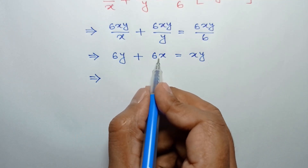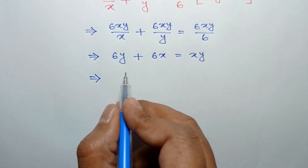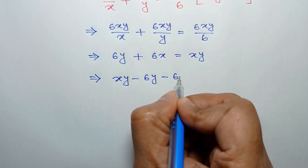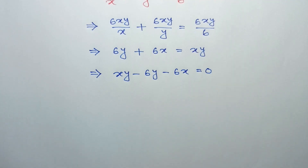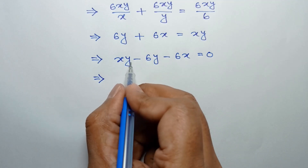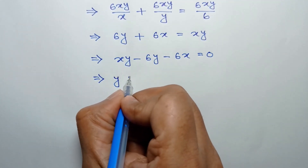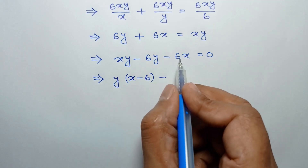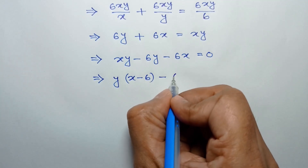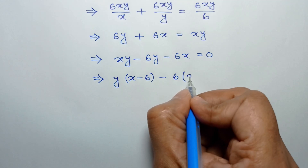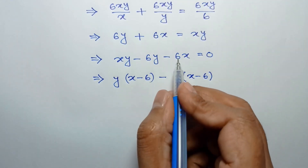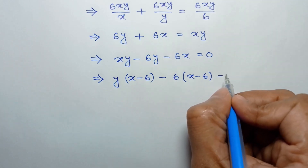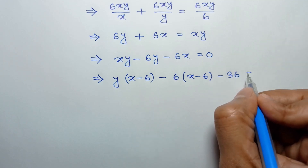Taking the left side to right and right side to left, we can write xy minus 6y minus 6x is equal to 0. Taking common y from the first two terms, we can write y times (x minus 6). To make a factor of (x minus 6), we take common 6, giving negative 6x, and negative 6 times negative 6 is positive 36. If we subtract 36, it remains balanced at 0.